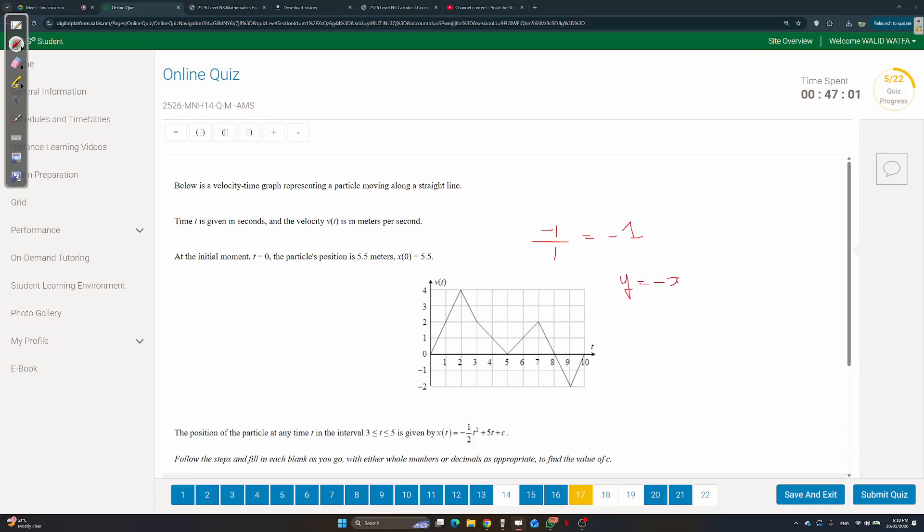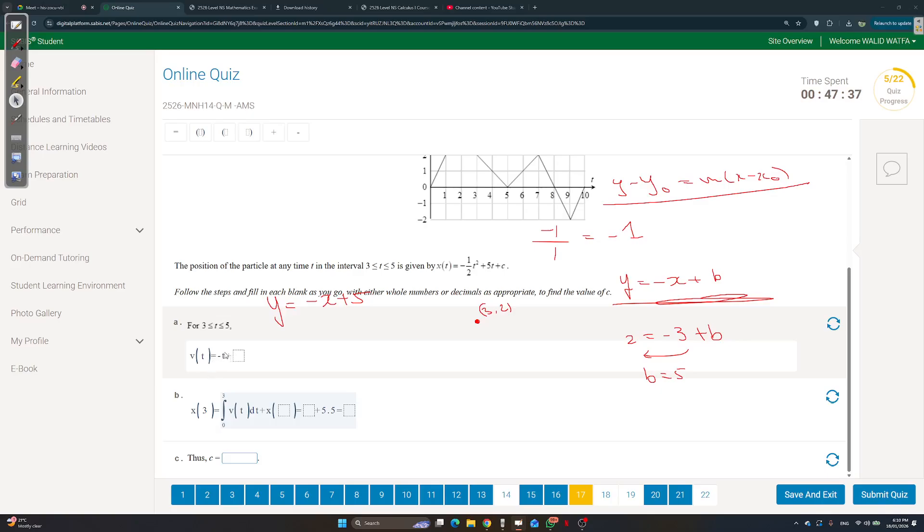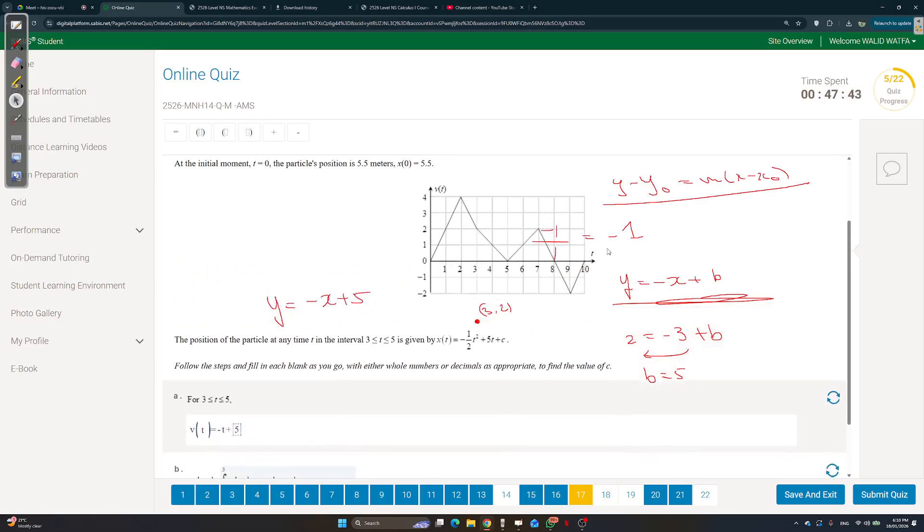So your equation of the line will be negative x plus something. How do we find it? You have to take one point and substitute it. Many people use y - y₀ = m(x - x₀), which is completely fine. I prefer this. If you take this point here, 3 comma 2, the y is 2, the x is 3. So negative 3 plus b. Take negative 3 to the other side, you get b is 5. So the expression for the velocity between 3 seconds and 5 seconds is negative x plus 5. But they want it negative t plus 5. Instead of x, they want t, because it's a t graph, v-t not v-x.